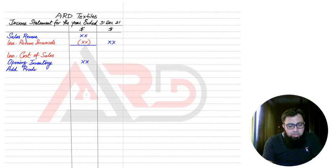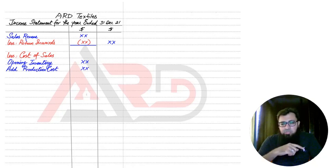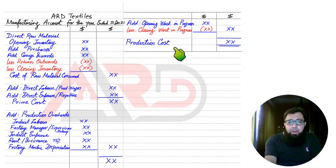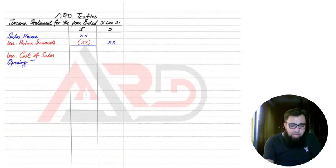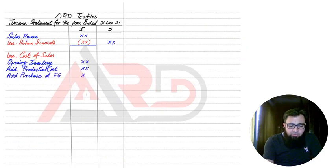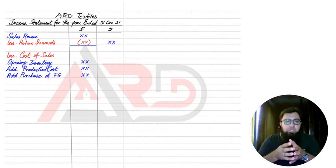Then we add production costs. Production costs can be calculated from the manufacturing account part discussed in the last video. The final amount from Part A — the manufacturing account — is carried forward to the income statement as production costs. So we have opening inventory, then we add production costs. There can also be a purchase of finished goods, so there are two costs: one is production costs and one is purchase costs.